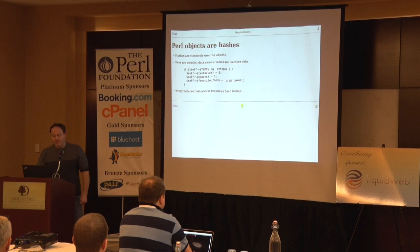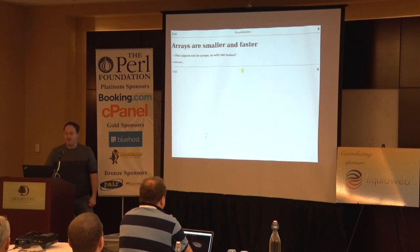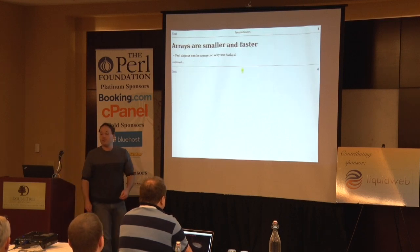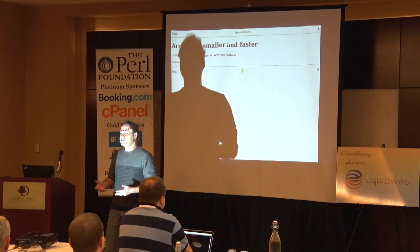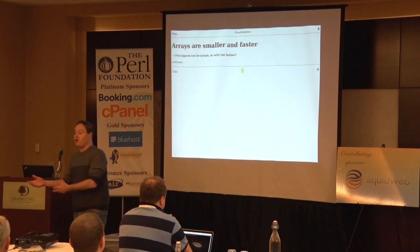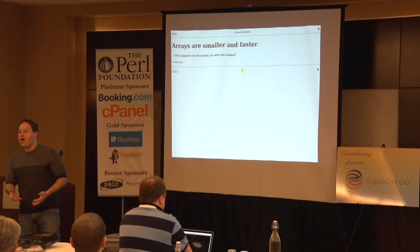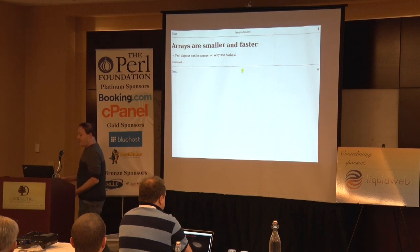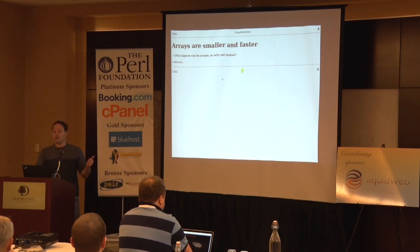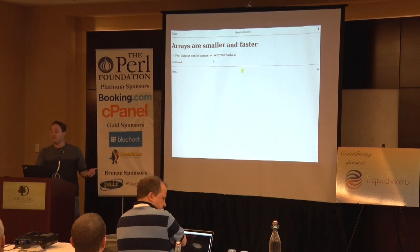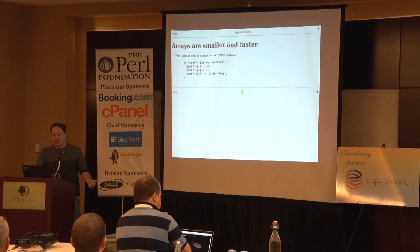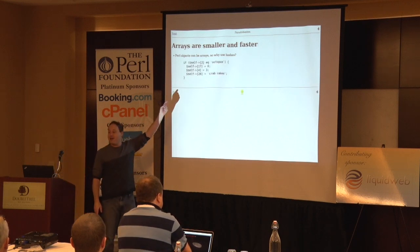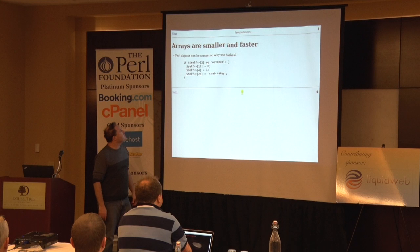About 15 years ago, someone had a nice idea: Perl objects can be arrays. They don't have to be hashes — they could also be arrays. Why not use arrays instead of hashes? Because arrays are smaller than hashes and faster than hashes. And the answer is because then the code looks unworkable.